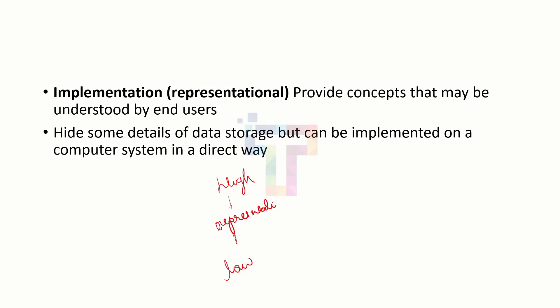In the representational data model, unlike the low level, the user doesn't need to understand how the data is stored internally. This concept can be understood by the user. It hides some details of the data storage but can be implemented on a computer system in a direct way. It is in between the high level and low level.